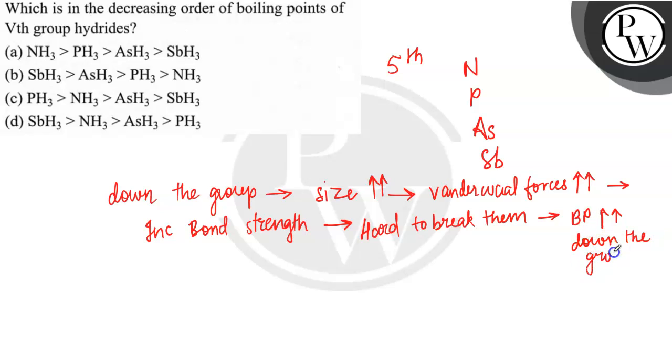This is our main concept. But let's write the expected order, which would be SbH3 greater than AsH3 greater than PH3 greater than NH3.